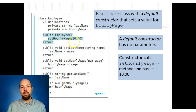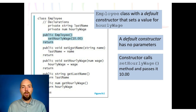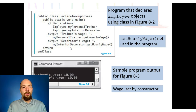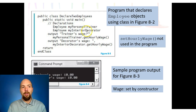We could also do other things — for example, display a message that says a new object has been created. The whole purpose of the constructor is that we can override default values that would normally be created, or get it to do something else if we need it to. In this example, we declare two employees: My Personal Trainer and My Interior Decorator.